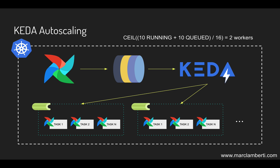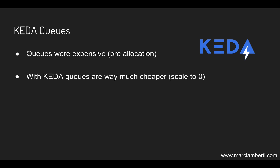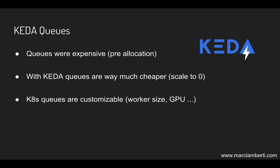This is huge in terms of scalability, cost effectiveness, and resources. Before KEDA, creating a queue was expensive — for example, if you needed CPUs for intensive tasks you had to pre-allocate those resources and once the tasks finished the resources weren't released. With KEDA the queues are cheap, as the workers and resources allocated can scale to zero while keeping the level of customization you want. I strongly encourage you to try this configuration.